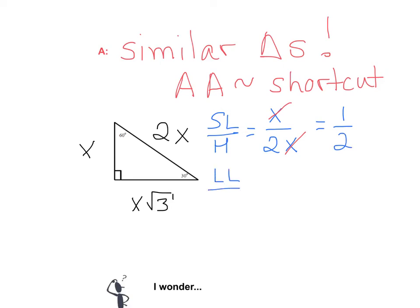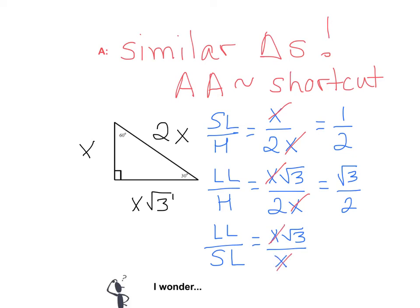We take the long leg to the hypotenuse, and the long leg is x radical 3 to the hypotenuse, which is 2x. And again, that common factor of x is going to cancel right out, and we're back to the square root of 3 over 2. And then the final ratio is long leg to short leg. And in this case, the long leg is x radical 3, and the short leg is x. And there's that common factor of x canceling out again. And we're simply left with the square root of 3 over 1.